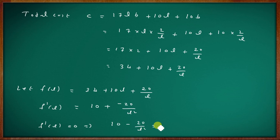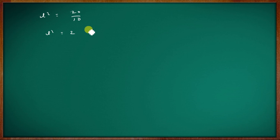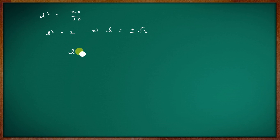To minimize cost, set f'(L) = 0: 10 − 20/L² = 0, which implies L² = 20/10 = 2, so L = √2 (taking positive value since length must be positive).